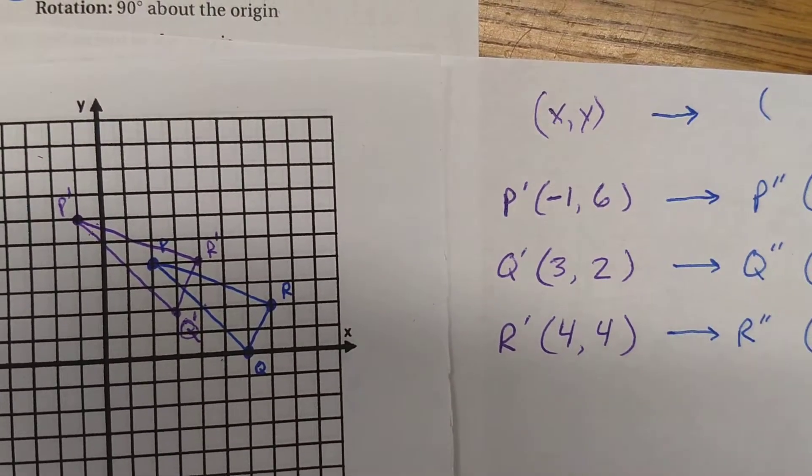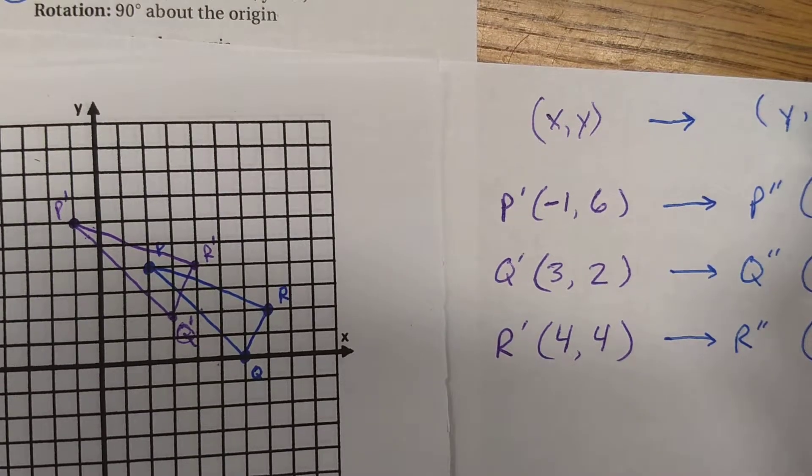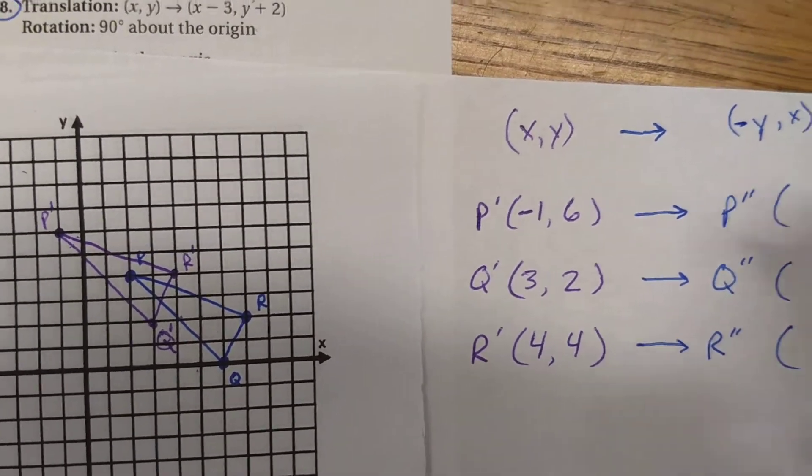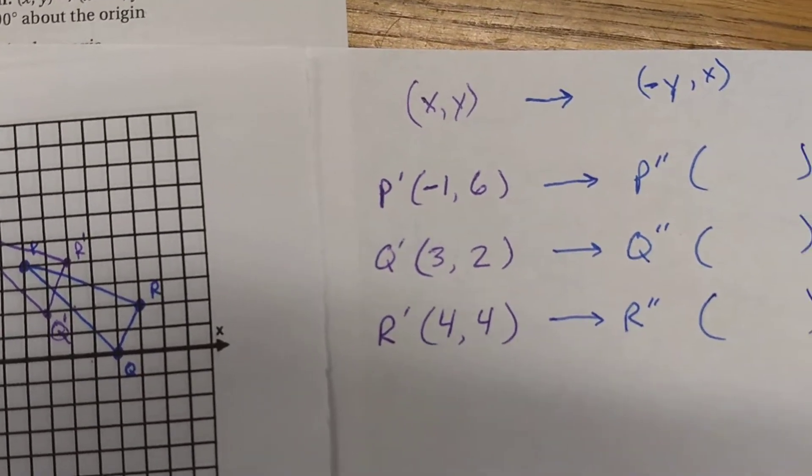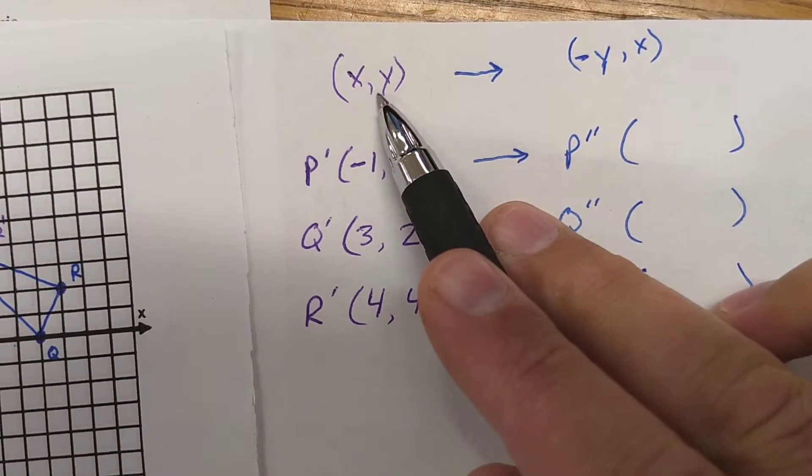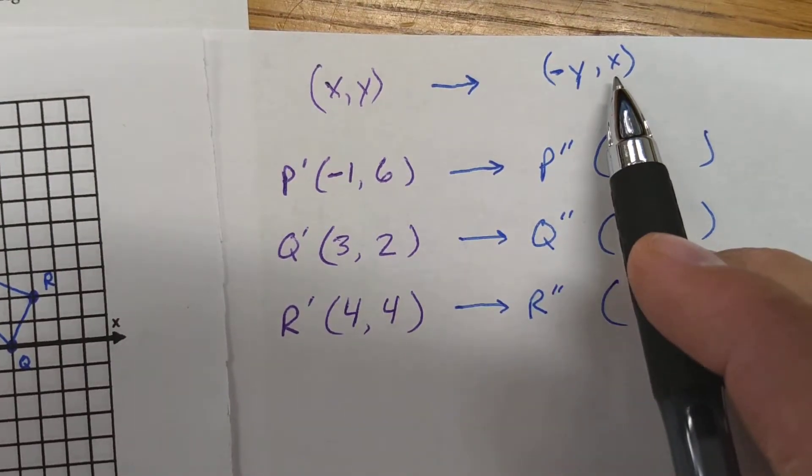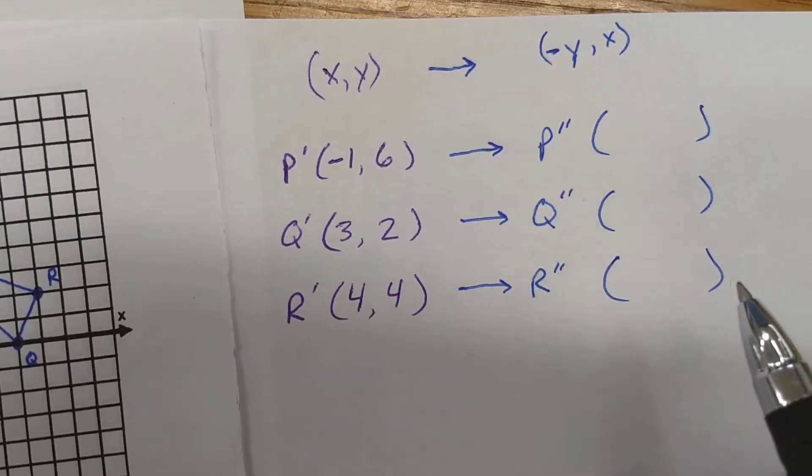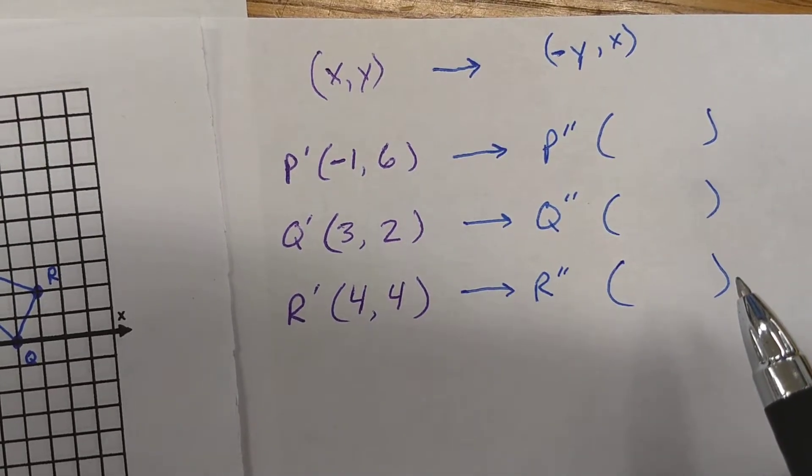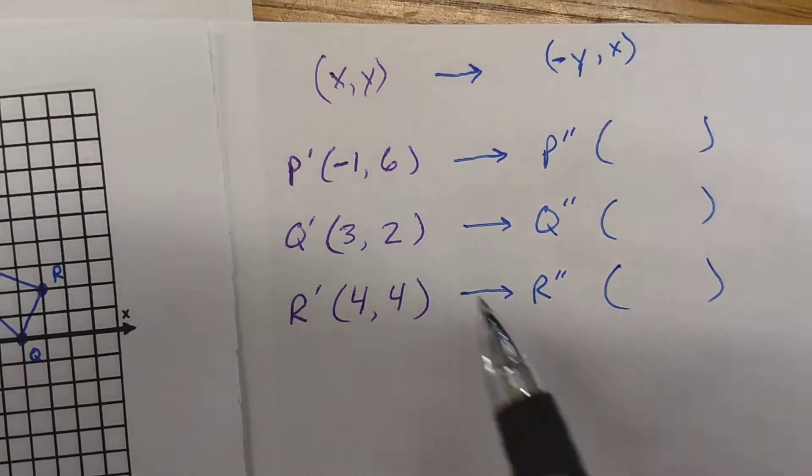If you remember, the rule for a 90 degree rotation was to switch the x and y's around, and the y became negative. So it looks something like that. So we're going to use this rule, x, y turned into negative y, x, to come up with our p double prime, q double prime, and r double prime coordinates. So let's do that now.